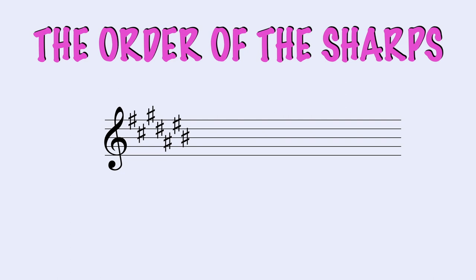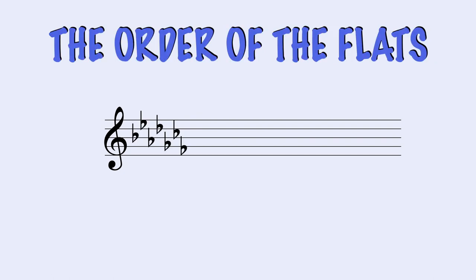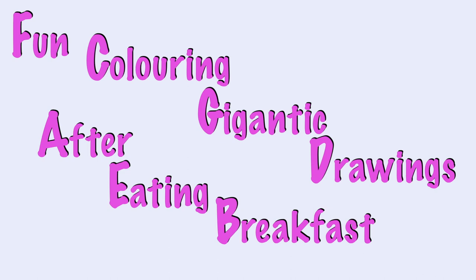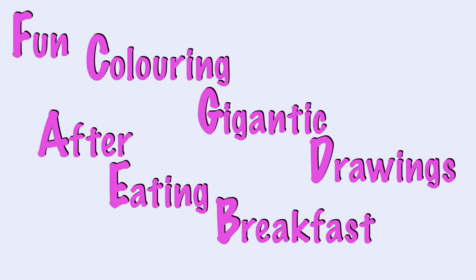As I said in my previous video, the order of the sharps and flats in a key signature is always the same: Fa Do Sol Re La Mi Si — Si Mi La Re Sol Do Fa. By letter name, the mnemonics are: Fun colouring gargantid drawings after eating breakfast, and big elephants ate dinosaurs, goat cheese, figs.